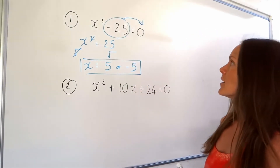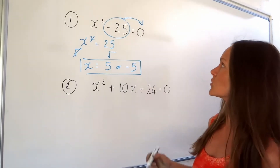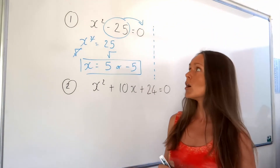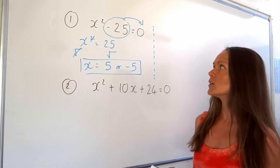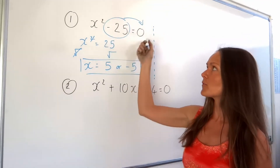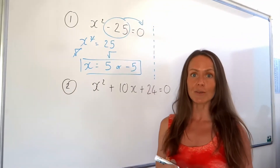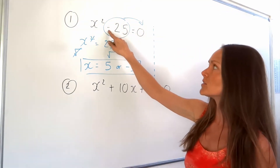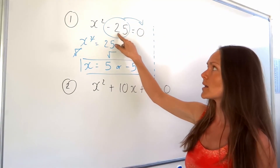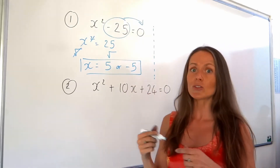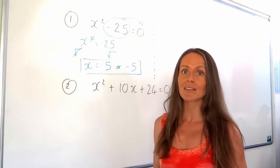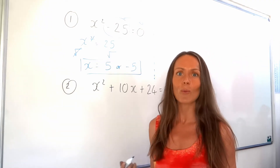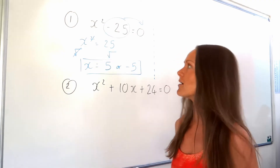The other method I'm going to show you is by factorising. Hopefully you recognise this type of factorising question as being the difference of two squares, because here's the difference, here's a square letter, and here's a square number. If you don't know what the difference of two squares is, I would have a look at the other video I've got on that.